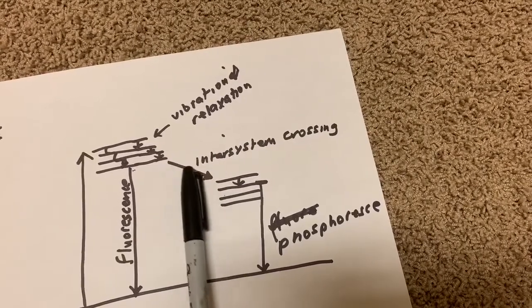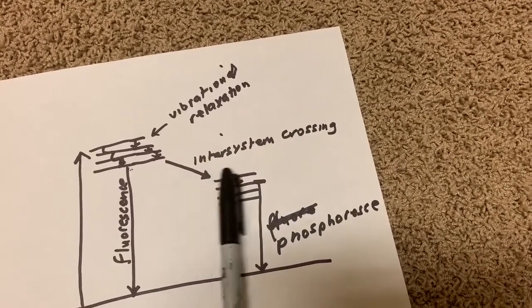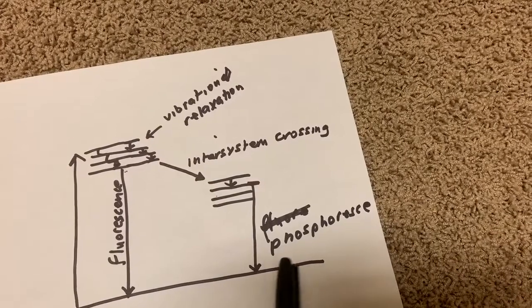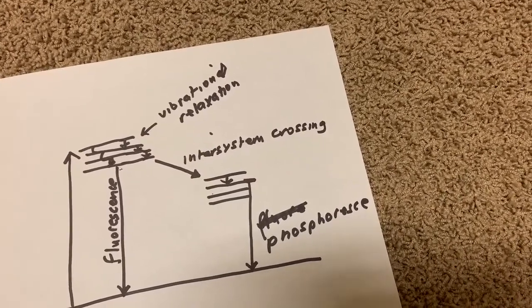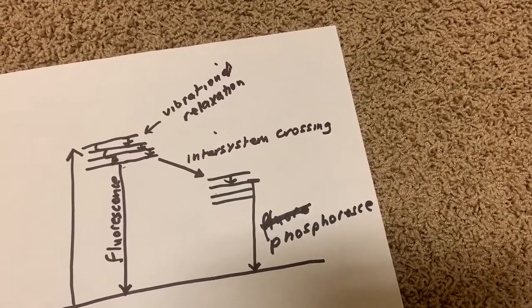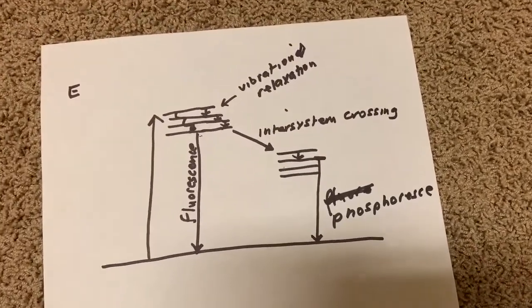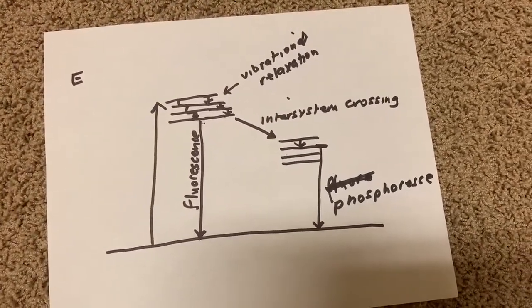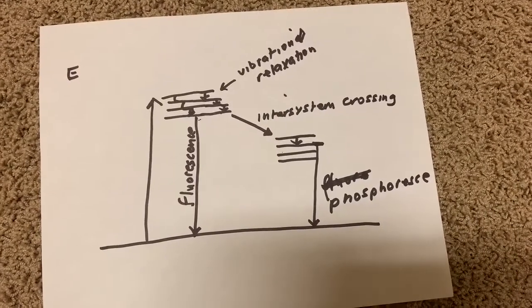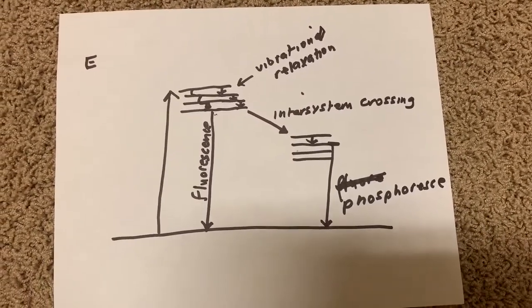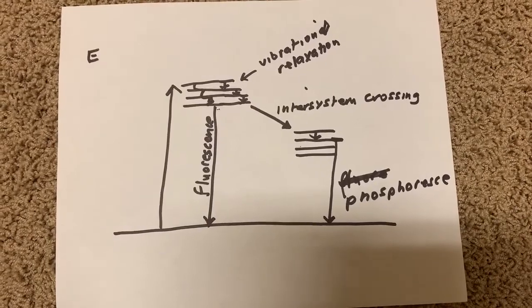While this inter-system crossing is going on, you've got a process known as phosphorescence, which can last from fractions of a second to several hours. Today I'm going to demonstrate this process with peanut butter, which may surprise some people if they've not heard of this before.